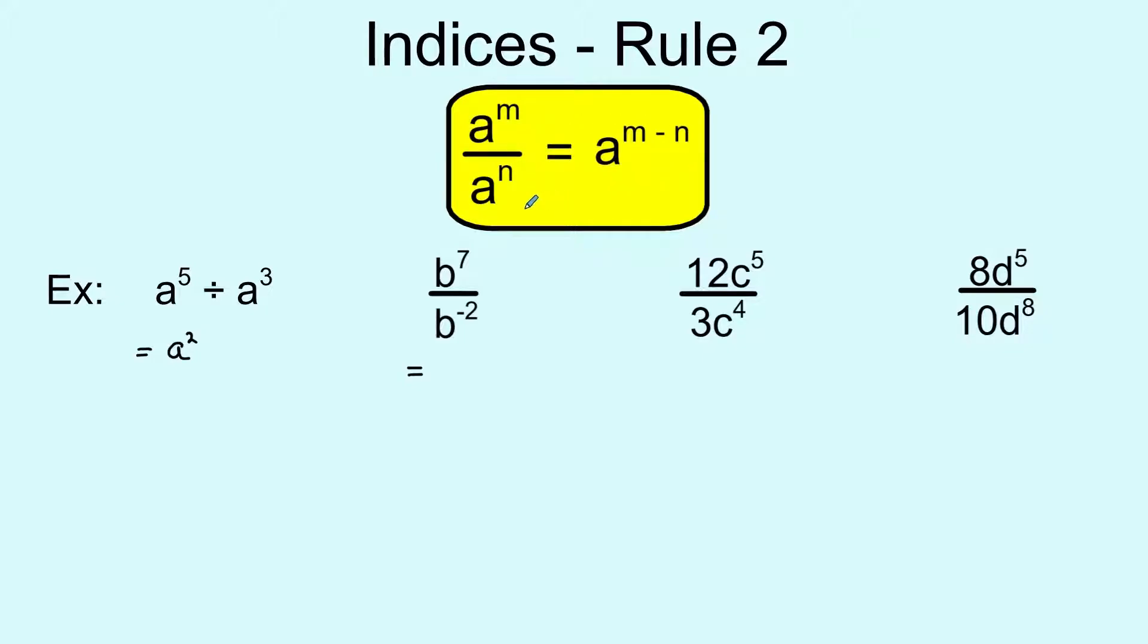If we look at this first example, a to the power of 5 divided by a cubed, if you do 5 take away 3 for the powers, that gives you a resultant power of 2, so we've got a squared as a final. The base doesn't change, all that changes here is the power.